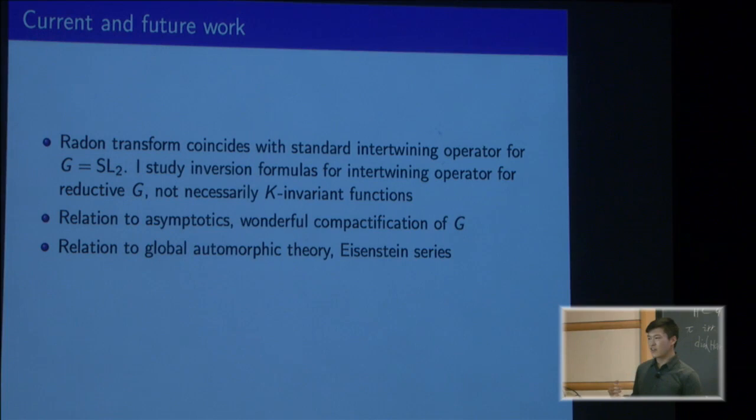On the geometric side, these Zastava spaces, as I mentioned, are local models for other spaces. They have generalizations—you can define them for spherical varieties. These are related to these other geometric spaces defined by Gaitsgory and Nadler. I want to try to go the opposite direction of the direction of my talk, which is to use this geometry of sheaves in order to compute some formulas related to spherical varieties. These formulas are conjectured to be related to these local L-factors, which should show up somehow in period integrals.